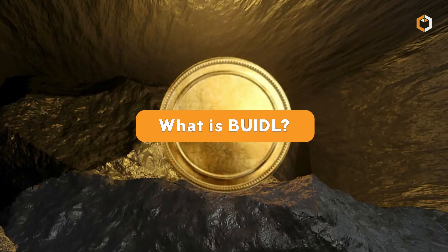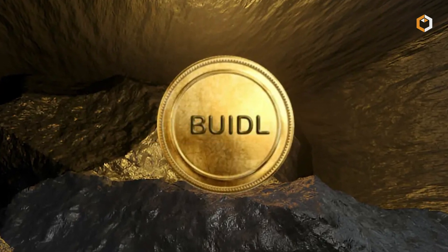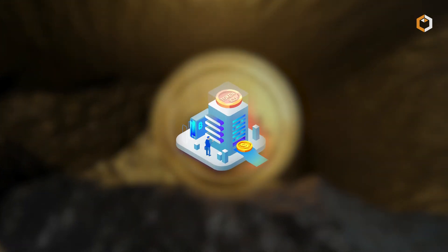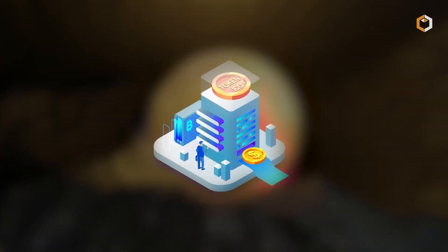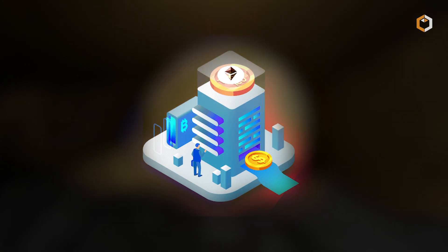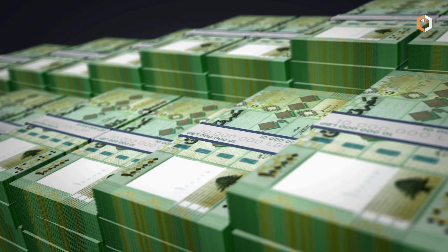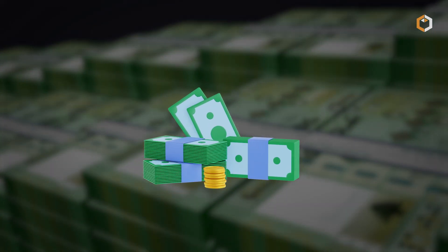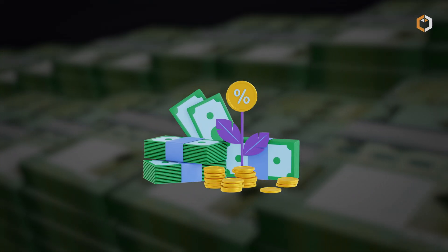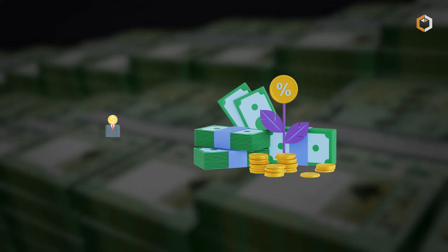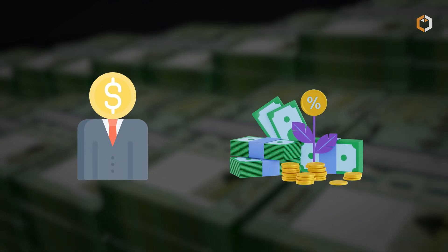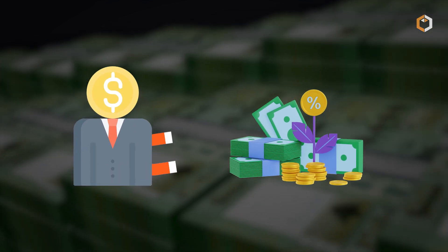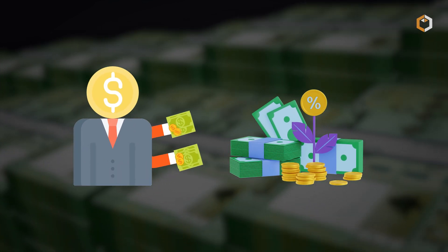What is the BUIDL? The BlackRock USD Institutional Digital Liquidity Fund is a tokenized fund that operates on the Ethereum blockchain. The fund invests 100% of its total assets in cash, U.S. Treasury bills, and repurchase agreements, allowing investors to earn yield while holding the token on the blockchain.